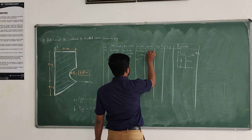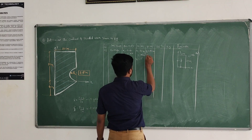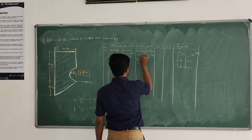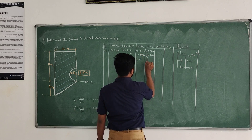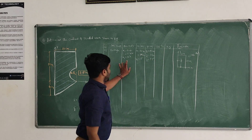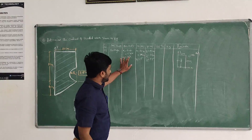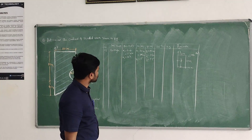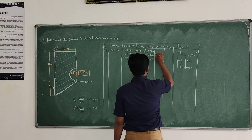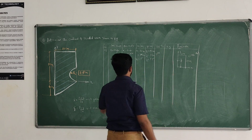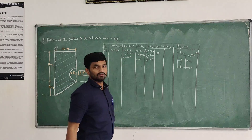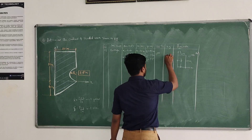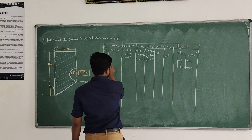Y1 = 15/2 = 7.5 cm. Now compute A × X and A × Y. A1·X1 = 150 × 5 = 750. A1·Y1 = 150 × 7.5 = 1125. So the first shape (rectangle) calculation is complete.